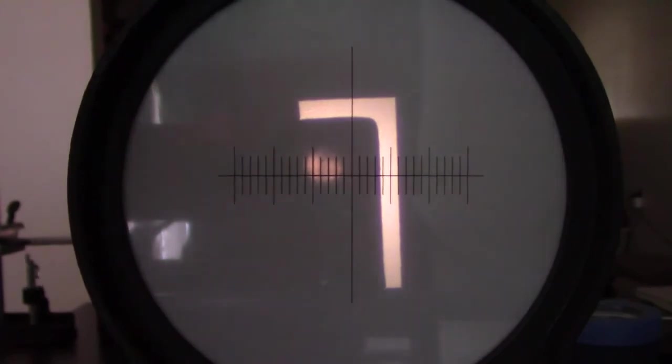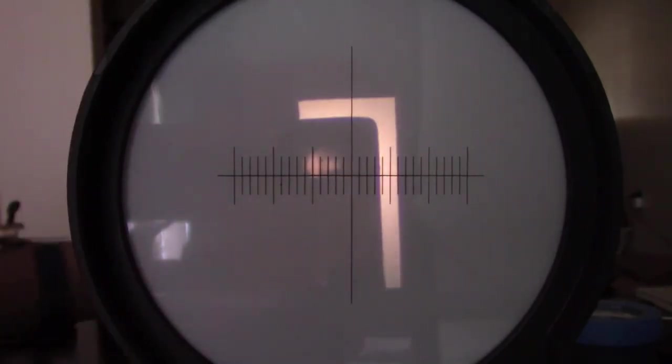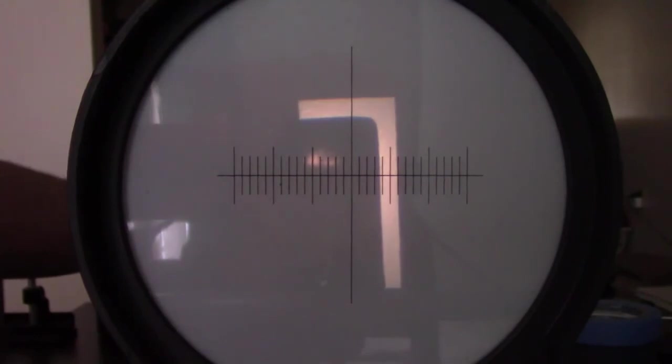So if we cover the top half, you'll notice we still see the whole L but it's gotten a tad bit dimmer. If we cover the bottom half, we get a very similar effect.